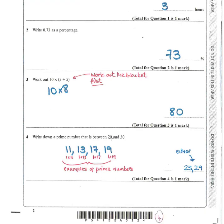A prime number between 20 and 30: a prime number is a number that's only got two factors. For example, 11 can only be written as 1 times 11. Likewise 13 and 17. The answers you're looking for are either 23 or 29. 27 isn't prime because you can make it with 3 times 9 as well. 25 is odd but not prime because 5 times 5 also makes it. Either 23 or 29 will do — you don't need both.